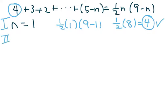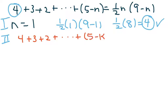Now we're going to check condition two. Write everything with k: four plus three plus two plus dot dot dot plus (5 minus k) equals one-half k times (9 minus k). Then we check for k plus one.